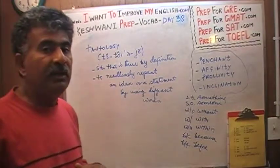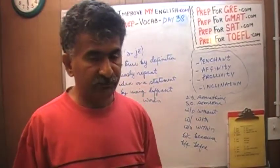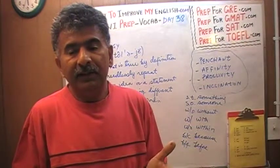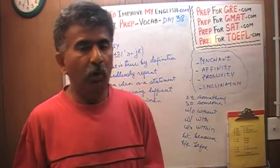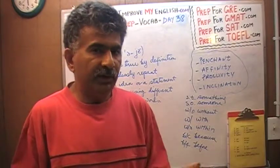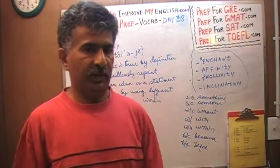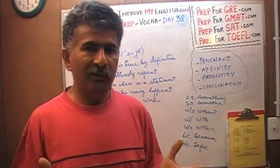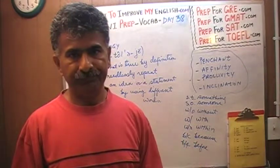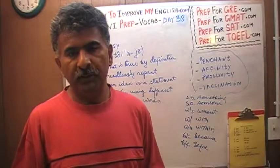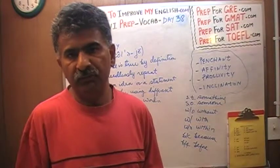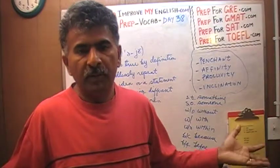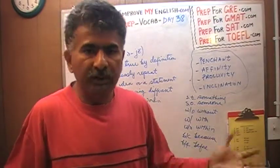When you state a tautology, you're not going to be wrong — you're always right. But you don't convey any new information. You said 'I was somewhere else' and therefore I wasn't here yesterday. You're right in that statement, but you haven't told me anything at all.